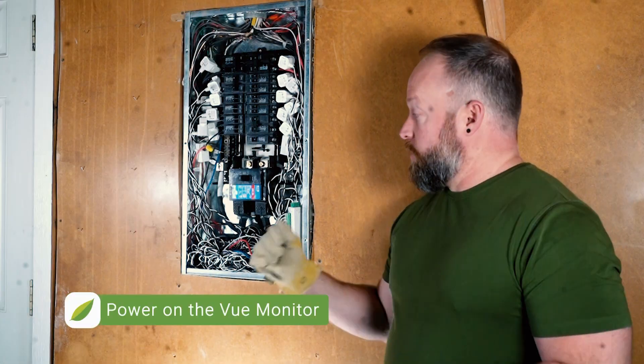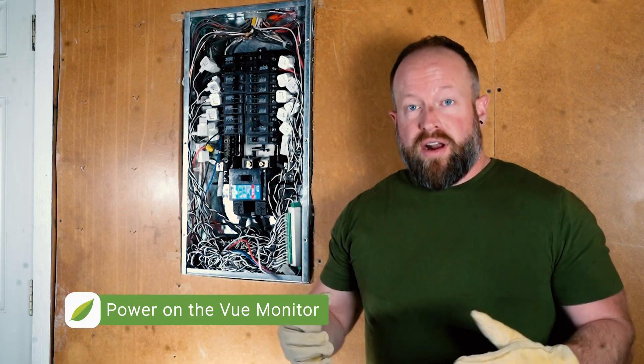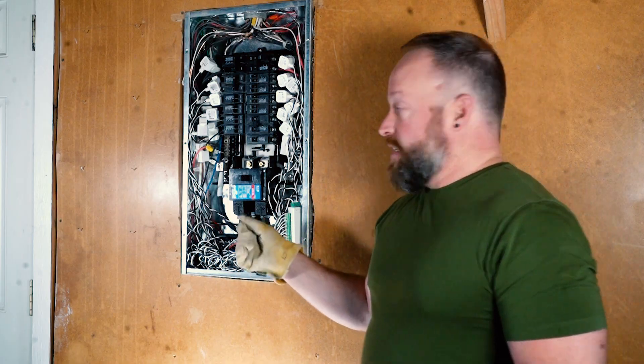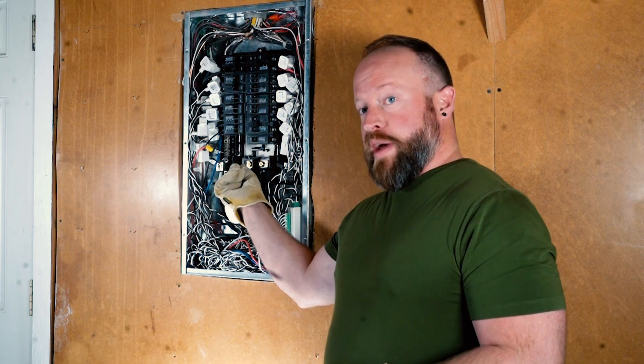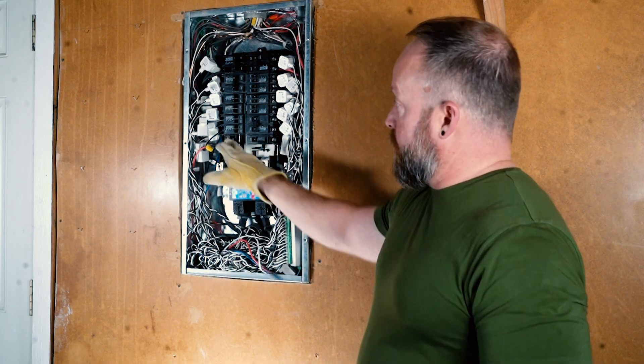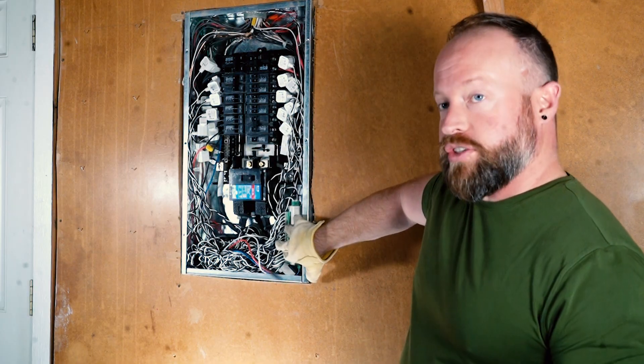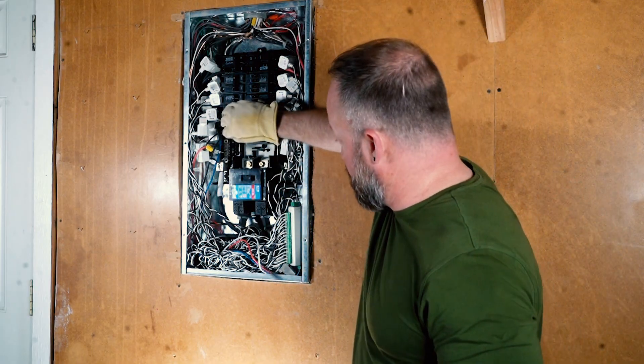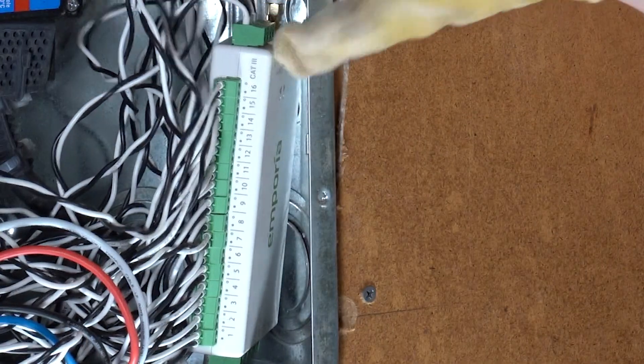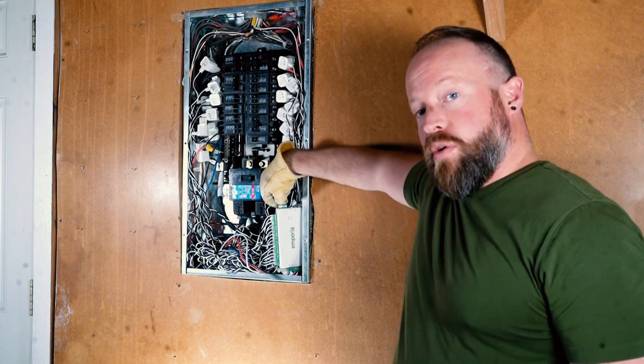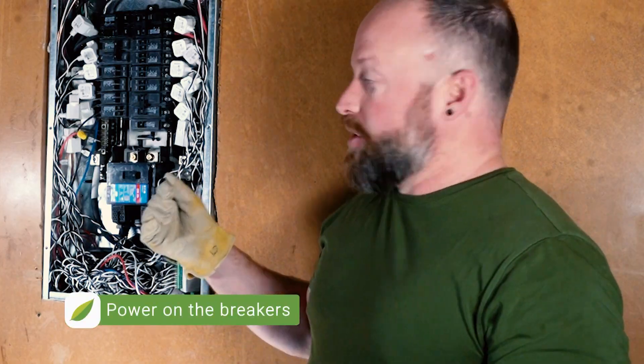Now that everything's in place and the unit is connected, it's time to power it on and make sure we connected it correctly. The way I'm going to do that is first turn on the mains power, and then I'm going to turn on the breaker to which the power connections for the view are connected. I should see the LED on the view turn on, and that's how we know we've connected it correctly. The view is powered up, it's time to turn on all the other breakers.